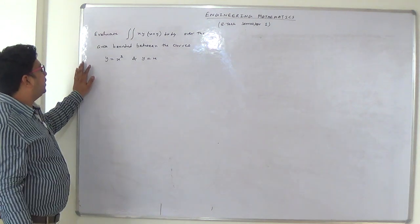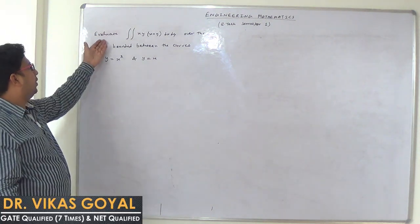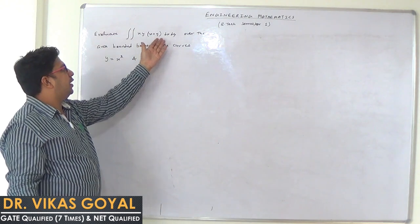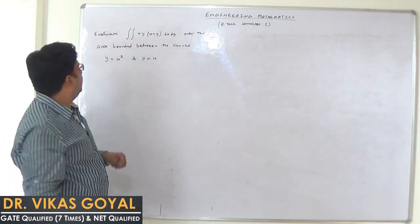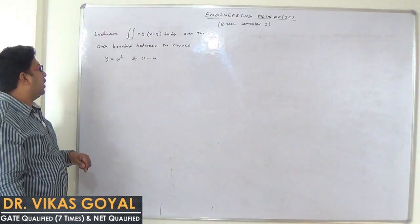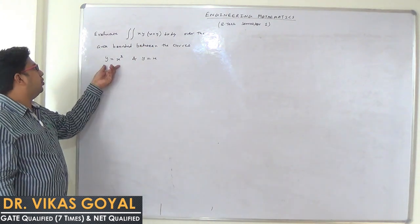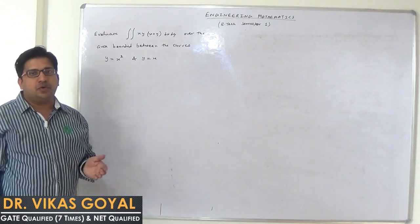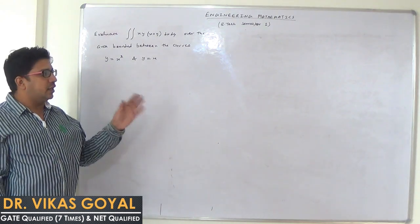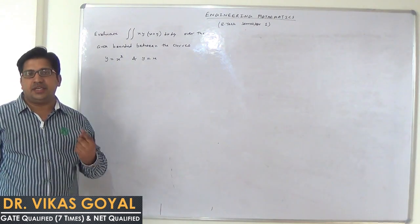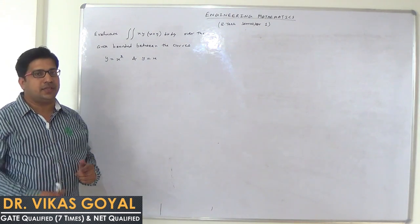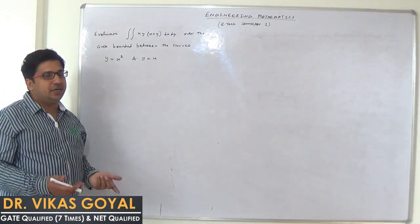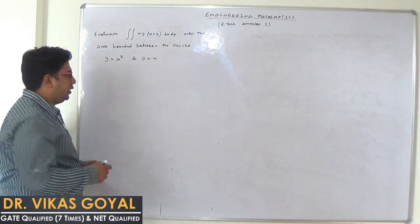Question on type 3: evaluate the double integral of xy times (x plus y) dx dy over the area bounded between the curves y equals x squared and y equals x. In the previous question we drew a circle, but here we have 2 curves, so we need to draw them. Start with the solution.